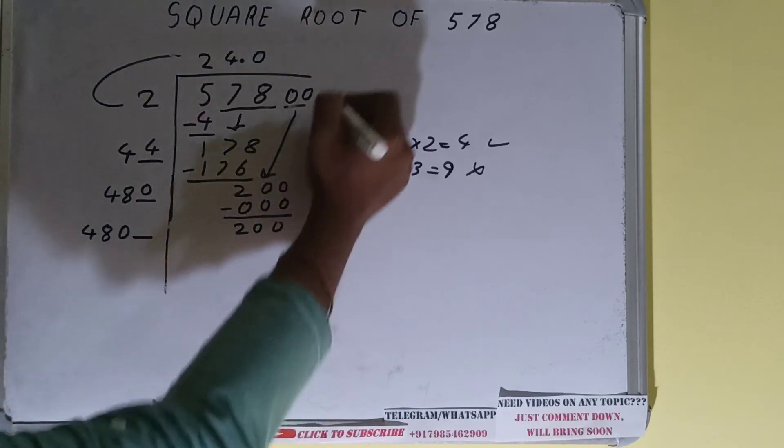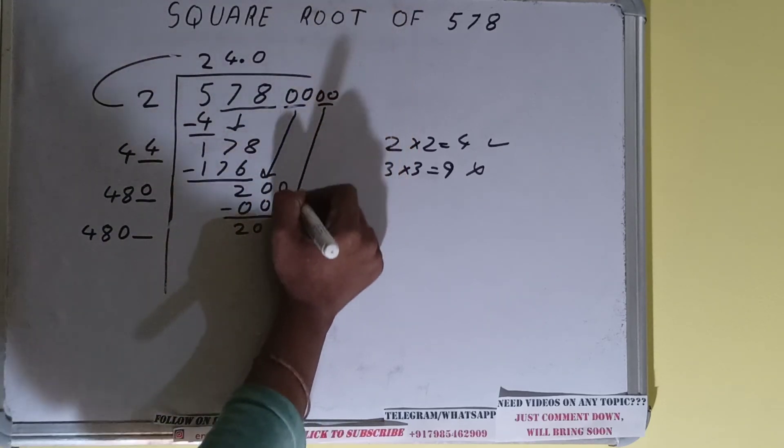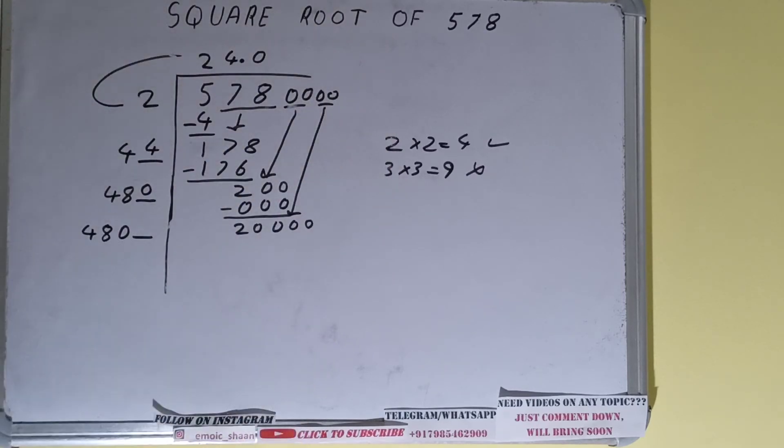And this number we need to make it big, so bring the next pair of zeros down. Bring the next pair of zeros down and it will become as 20,000. Now we can try 4 times.